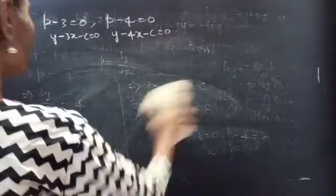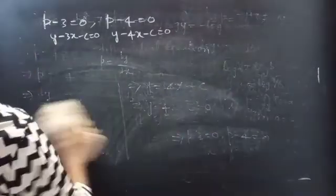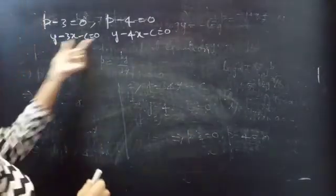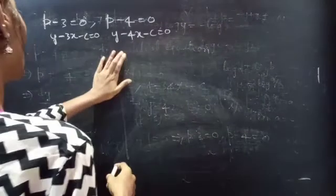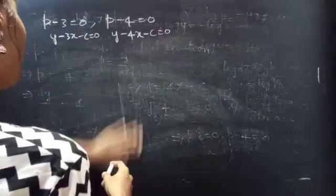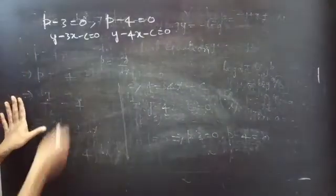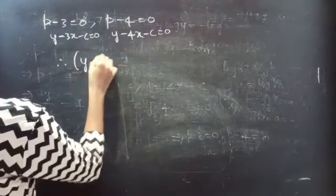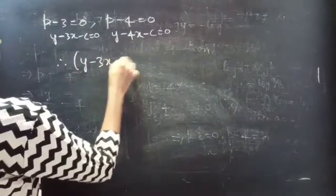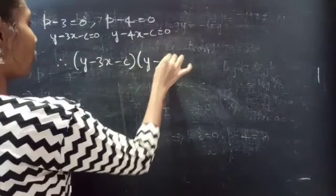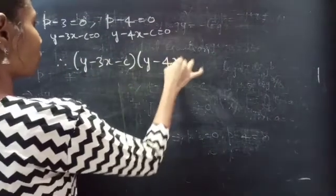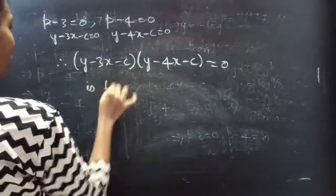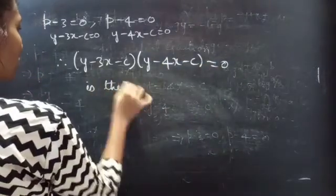Now, these two solutions — the combined form of these two solutions will be the required solution for the given differential equation. Therefore, (y minus 3x minus c) times (y minus 4x minus c) equals to 0 is the required solution.